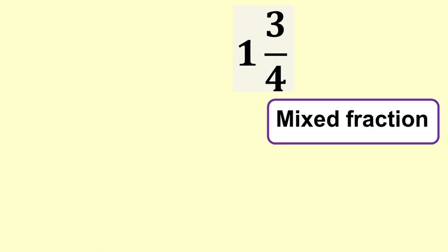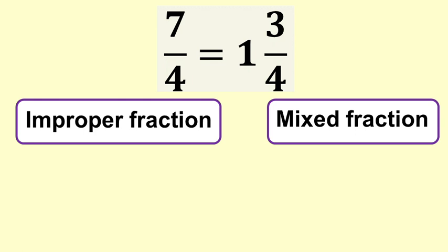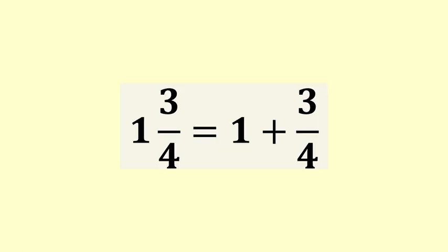One and three quarters is a mixed fraction. It is the same quantity but a different way of writing seven quarters. A mixed fraction includes a whole number and usually a fraction as well. The two are added together to make the complete quantity. One and three quarters is the same as one plus three quarters.